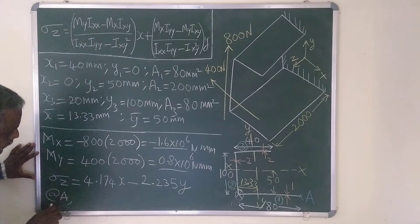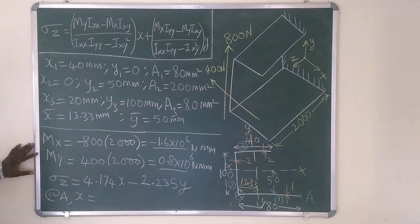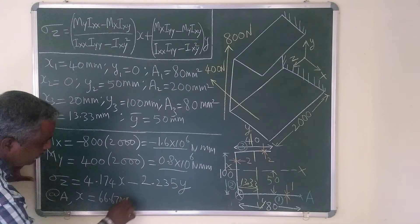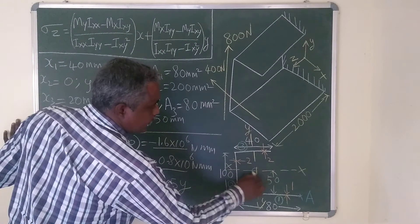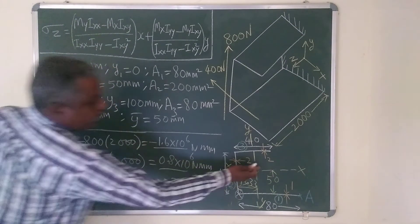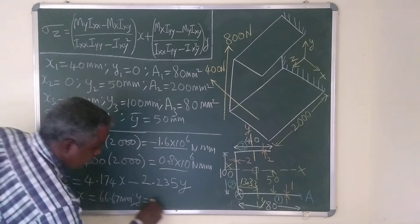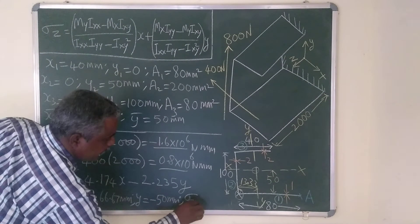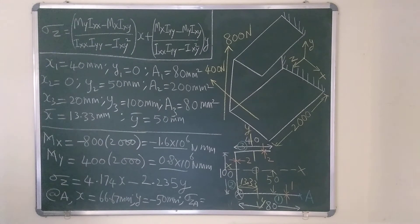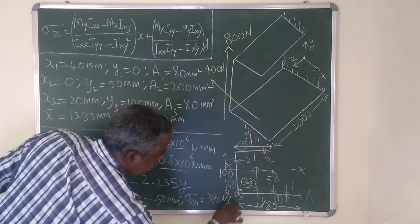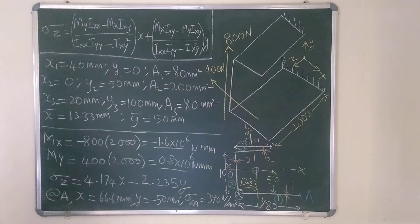At point A, the X coordinate is 66.67 mm — that is, the distance from the centroid to point A is 80 − 13.33 = 66.67 mm. The Y coordinate is −50 mm, since point A is in the fourth quadrant. Substituting these into the expression gives σz at A = 390 N/mm² — the direct stress due to bending at the fixed end.